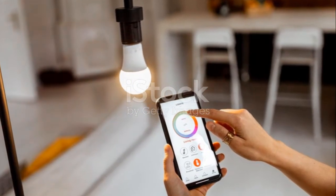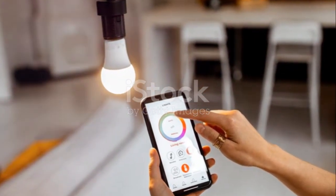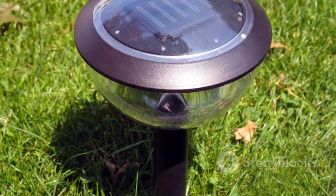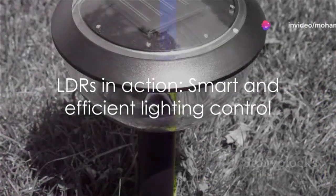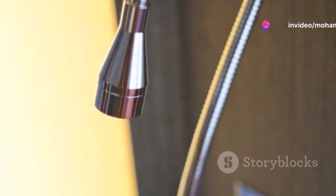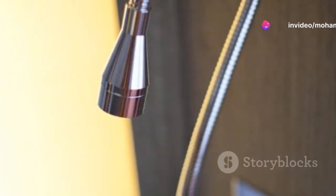As dawn breaks, light hits the LDR, decreasing its resistance, and the lights switch off. Isn't that smart? Similarly, LDRs are used in solar light detectors, adjusting the panel's angle for optimal sunlight exposure.